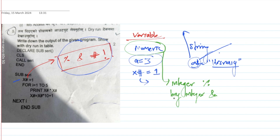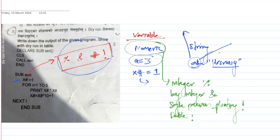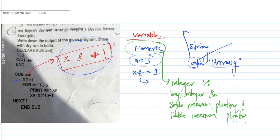Similarly, if you want to use a decimal point, then you can use single precision or double precision floating point numbers. If you want to use a float, you can use a decimal point. Double precision is also a floating point number, and you can use the corresponding sign for it.